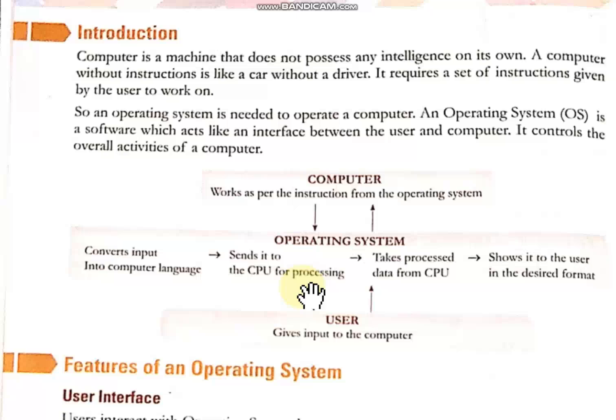Who is helping us to convert the language, send it to the CPU, take back the result from the CPU, and then show it to the user in the desired format? That is the operating system. So that is why it is very useful to us — it controls the overall activities of a computer. Examples of operating systems are Windows and Mac.